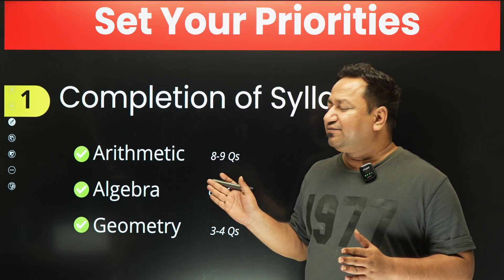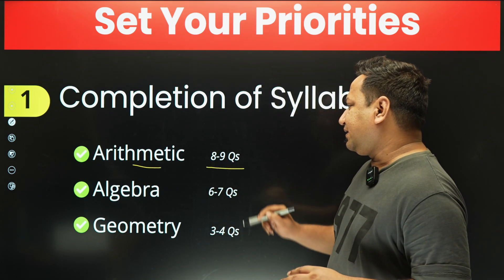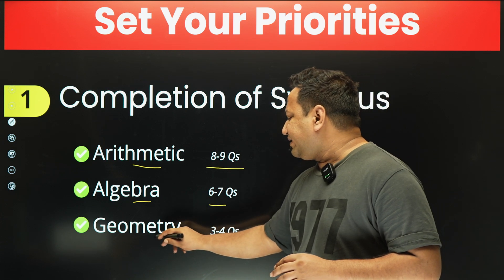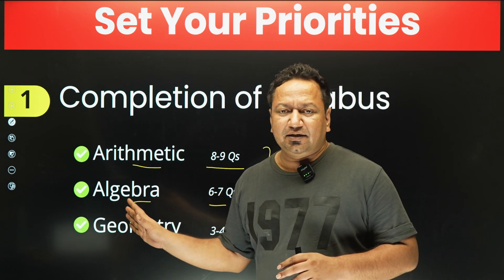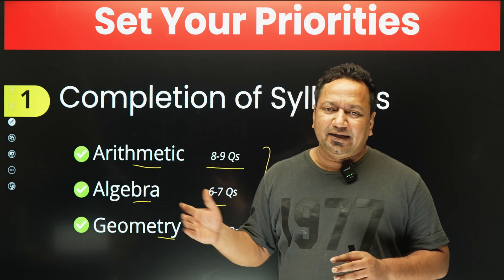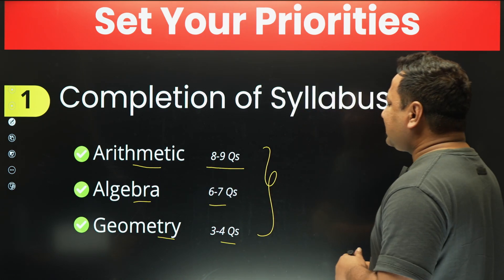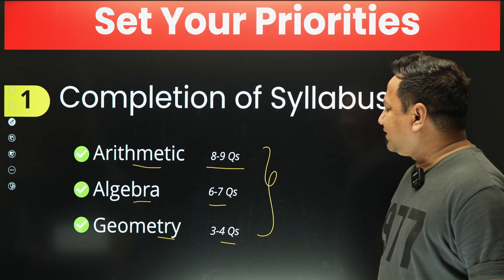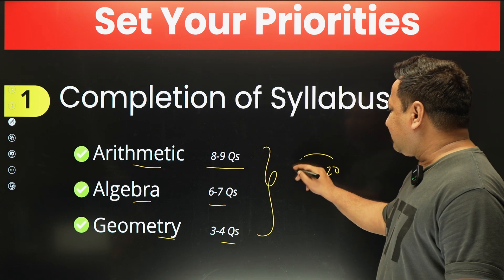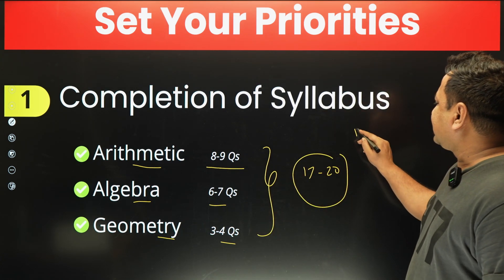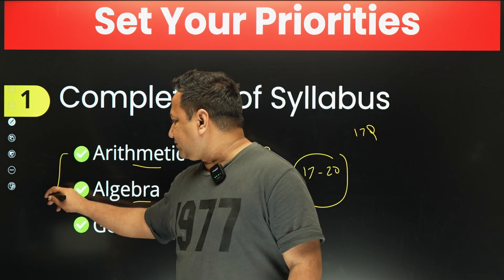I can tell you about quant specifically, because in VARC you don't have a fixed syllabus. In arithmetic, every year 8-9 questions come. In algebra, 6-7. In geometry, 3-4. I have given an entire statistical breakdown of what topics appear in the real CAT exam. So, 8+6+3 is 17 and 9+7+4 is 20 — that's 17 to 20 questions from just these three areas, out of 22. That's a huge chunk.